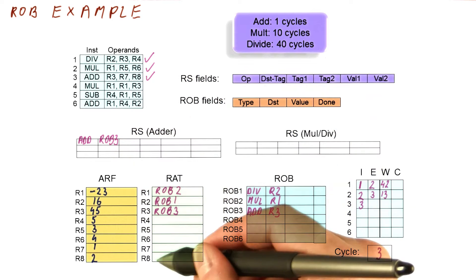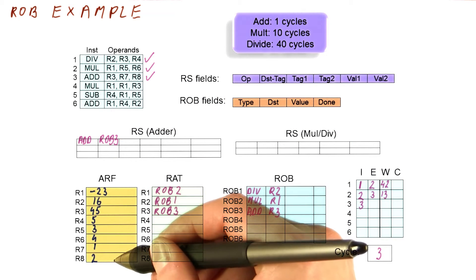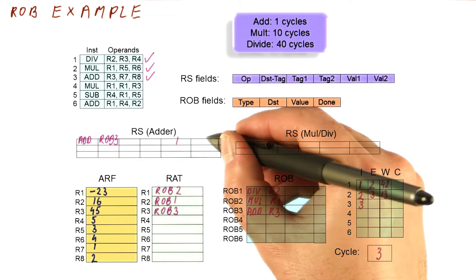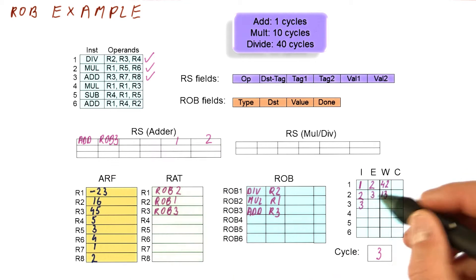We check r7 and r8, they are renamed to just the register file. So we can just take those values of one and two. And this instruction is ready to dispatch, which means it will begin executing the next cycle.